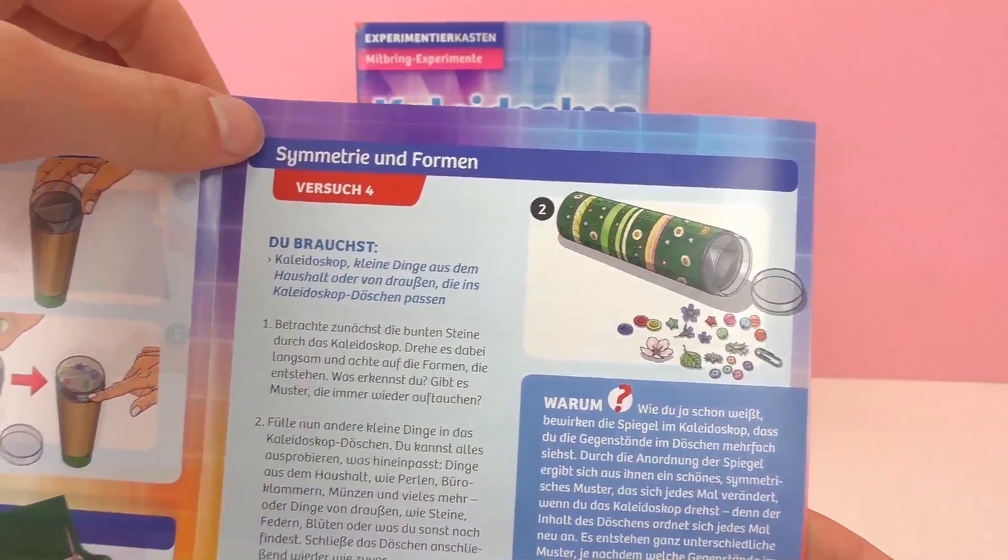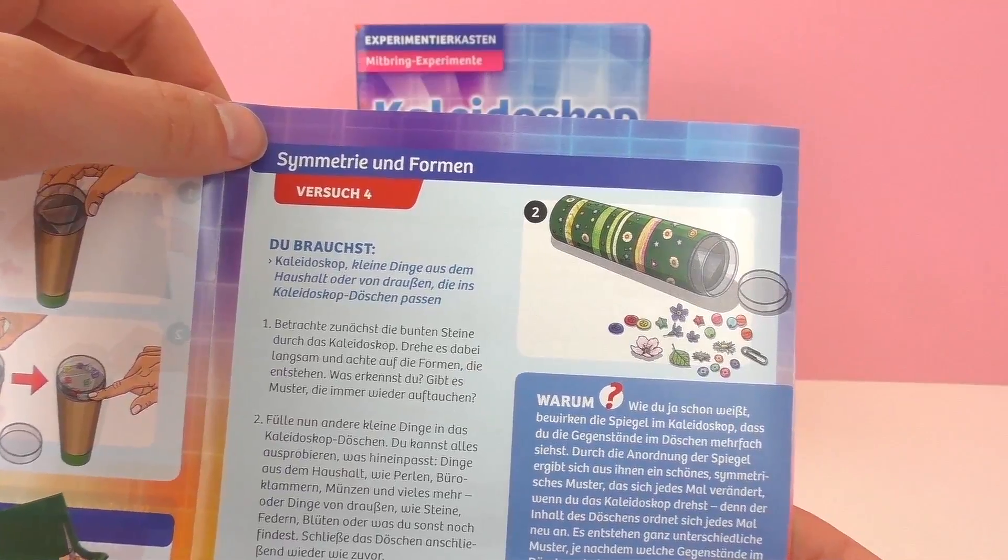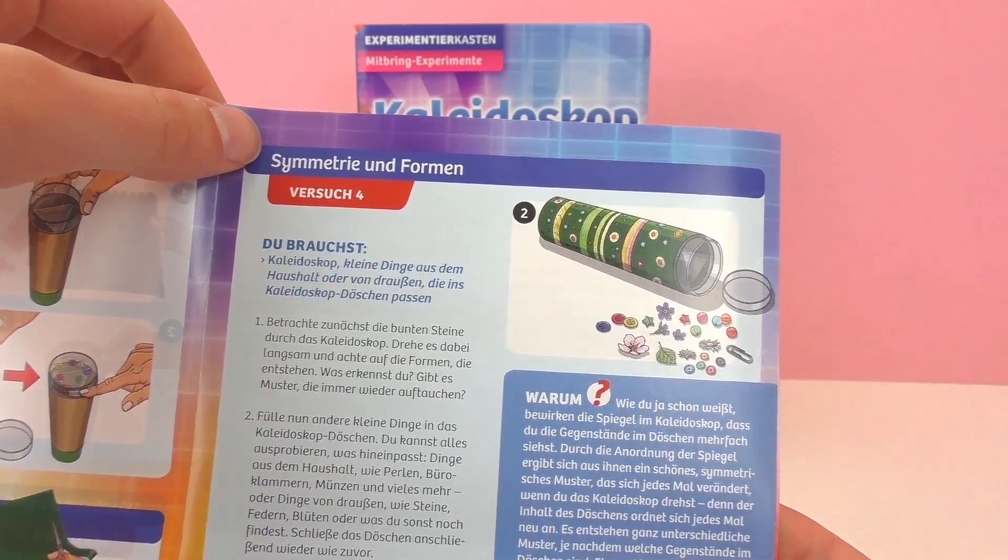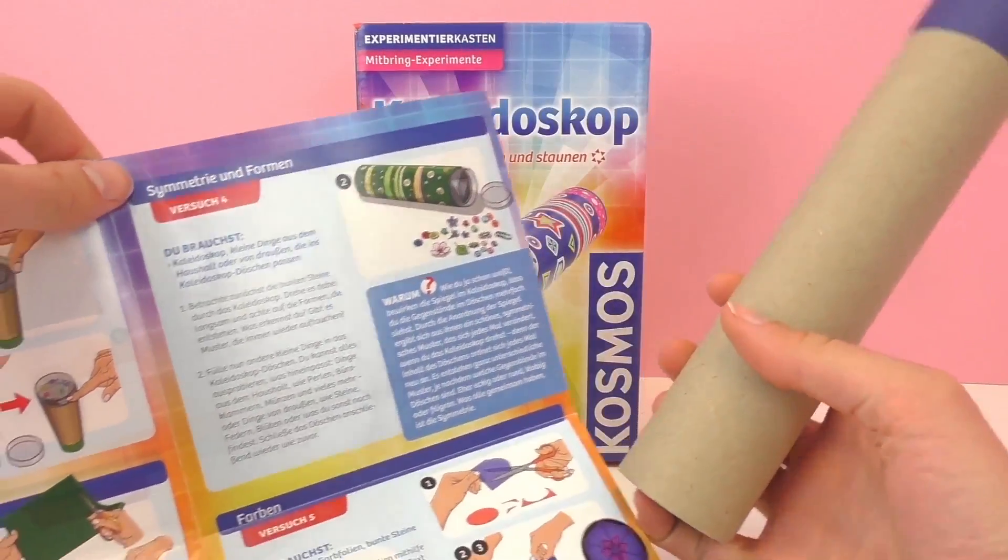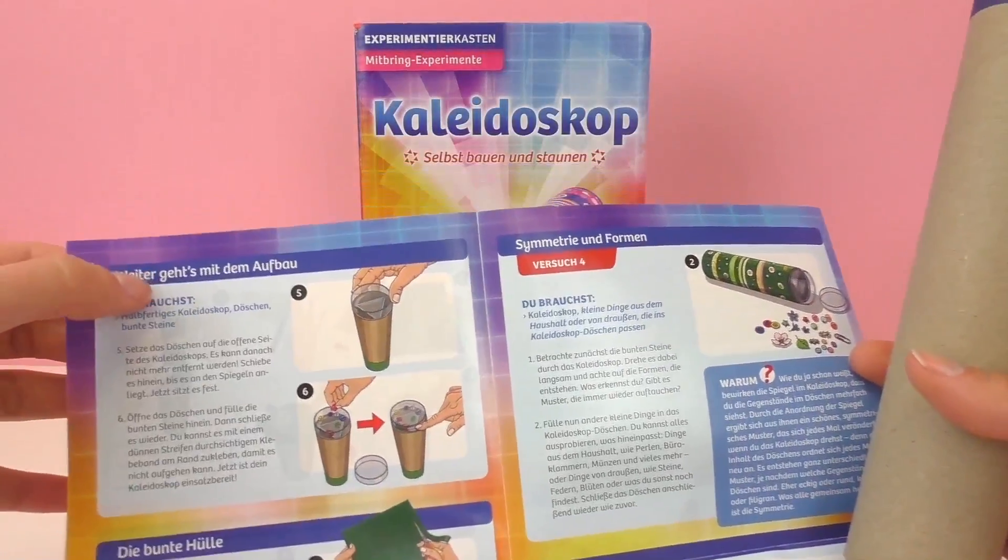If you haven't seen these videos go ahead and check out the channel, they're pretty cool. Today we're going to be doing experiment number four and we will be making the outside of our kaleidoscope as well as looking at symmetry and forms.